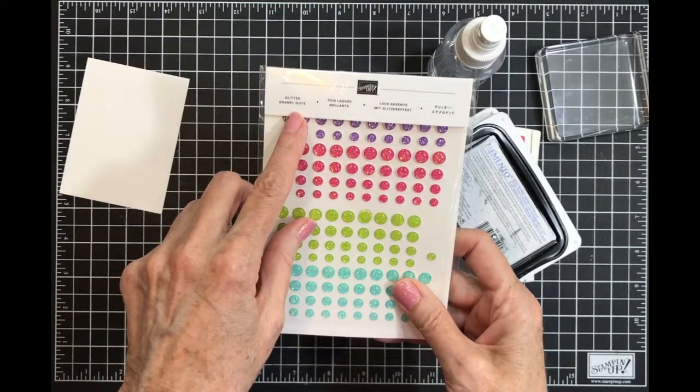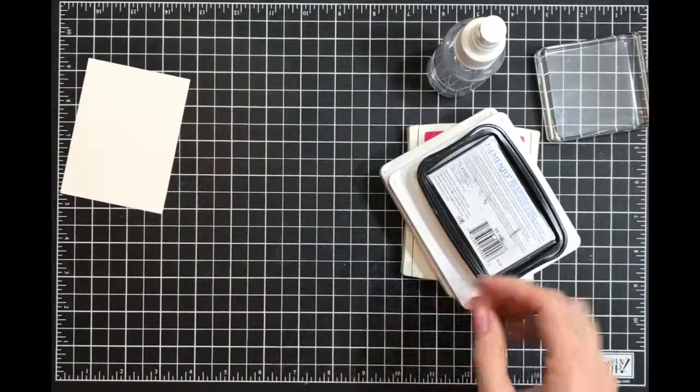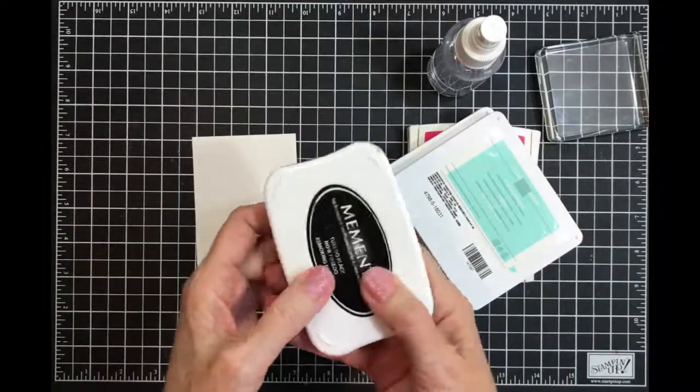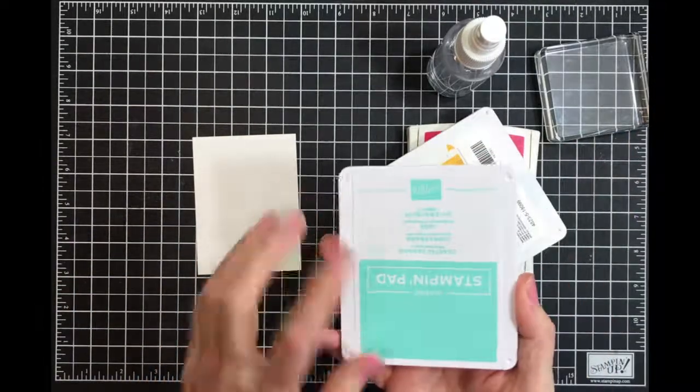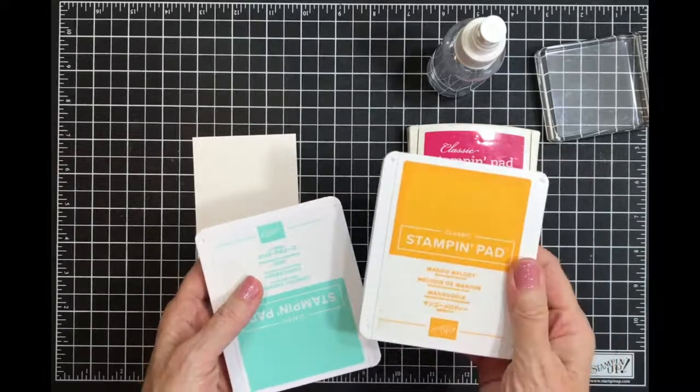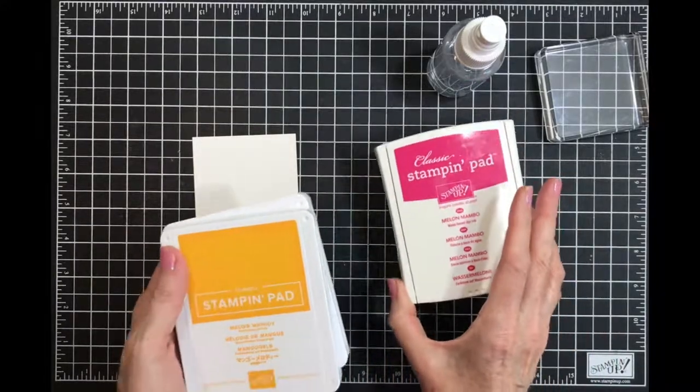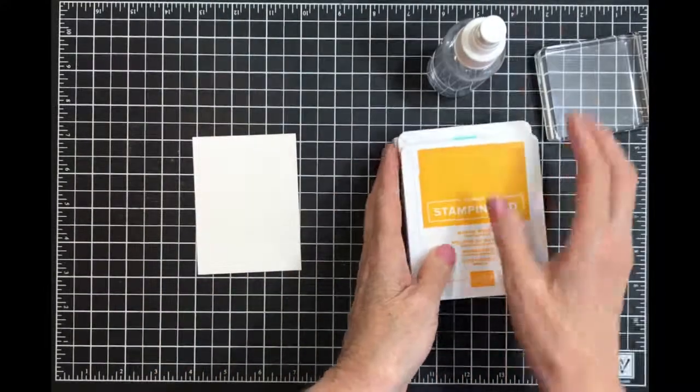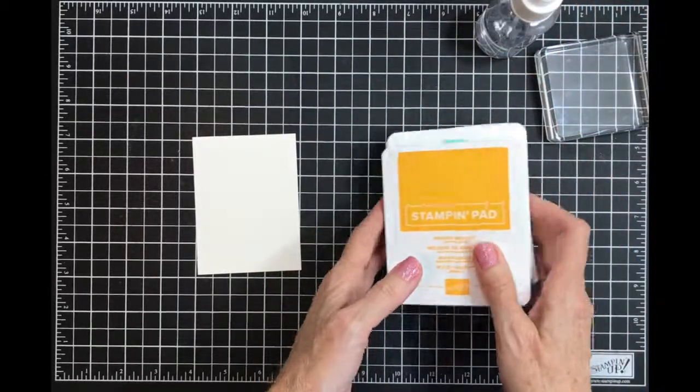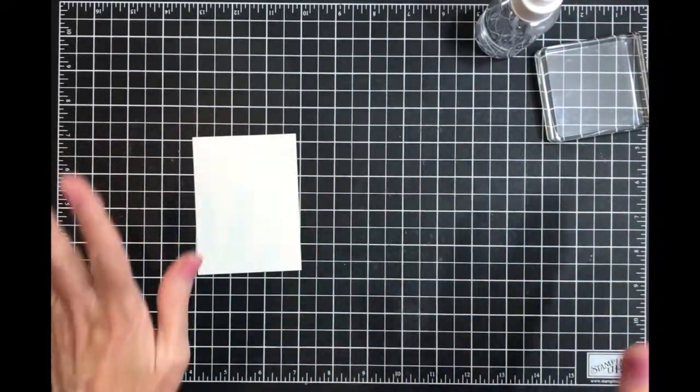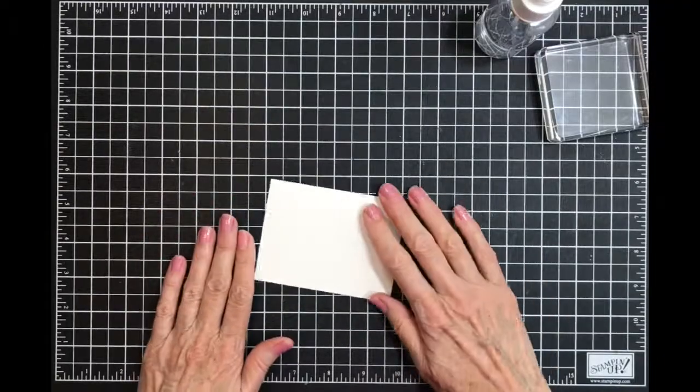I'm going to be using some of the glitter enamel dots. I have Memento black ink. I have coastal cabana, melon mambo, and mango medley. And I have a spray bottle of water. Now this is messy, so you need to make sure you have something underneath to protect your surface.